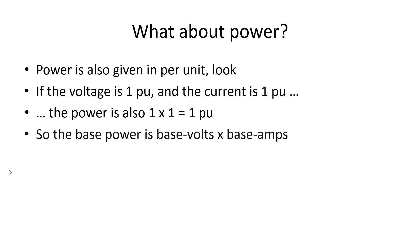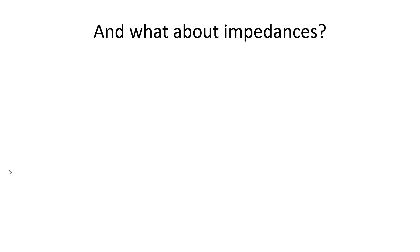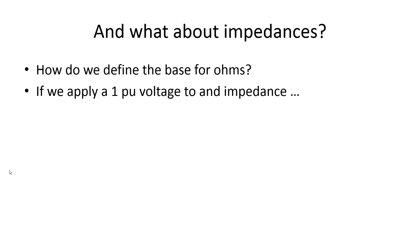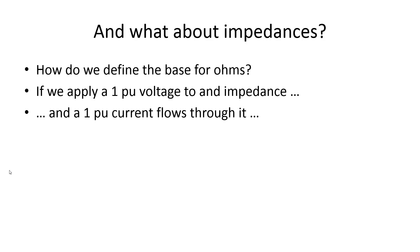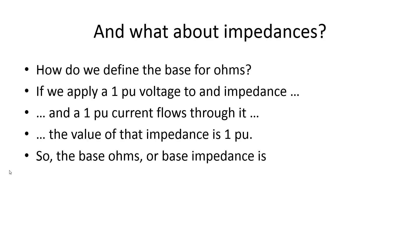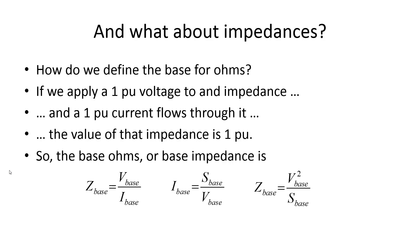What about power? Power is also given in per unit. If we apply a voltage of one per unit to a load and the load absorbs a current of one per unit, then that load is absorbing one per unit of power. That means the base power is base volts times base amps. For impedances, the base ohms is base volts divided by base amps, which equals base volts squared divided by base power.